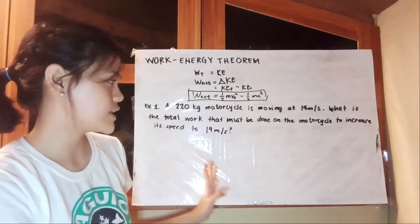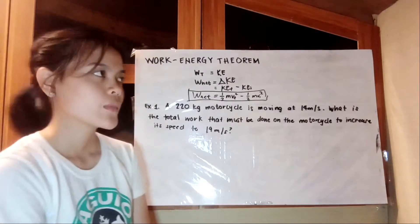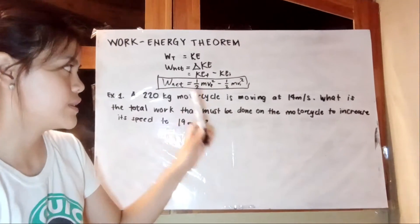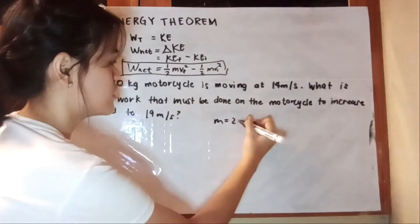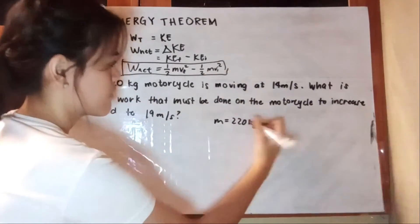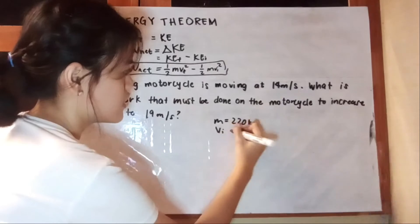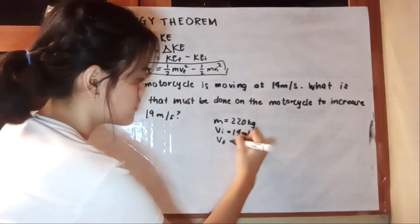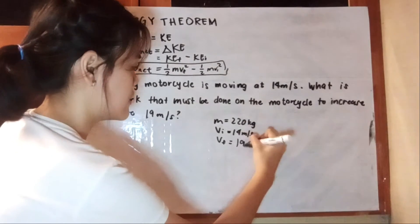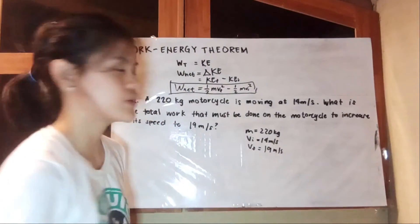What we're looking for here is the net work, and we're going to use this formula because we have here a mass of 220 kg, an initial velocity of 14 m per second, and a final velocity of 19 m per second.